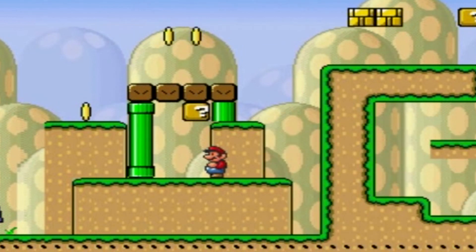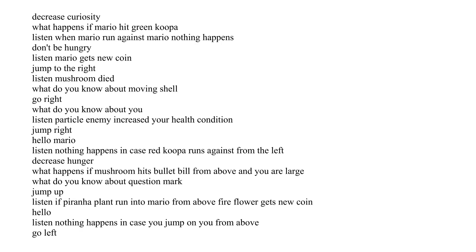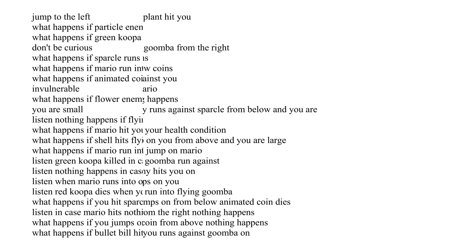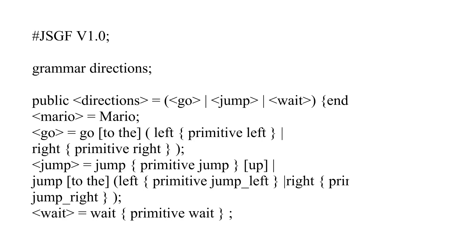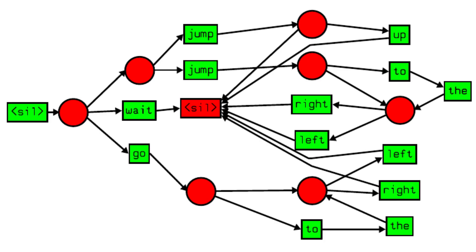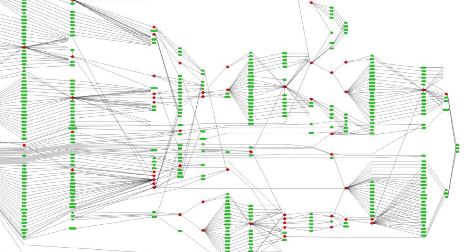By optimizing Carnegie Mellon's Sphinx 4 Speech Recognition Toolkit for the task at hand and for our German-English environment, Mario can understand a large variety of sentences. Here you see the context-free grammar and the resulting parse tree for simple behavioral commands. Including all other possible sentence varieties, the whole grammar got rather big.